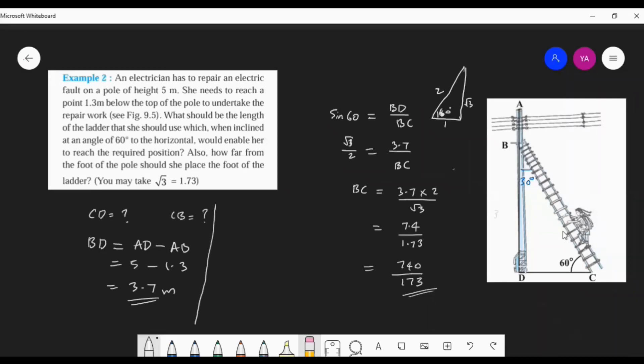Look here, we cannot finish here because it is also asked to find how far from the foot of the pole should she place the foot of the ladder. So CD also you want to find out. With respect to 60, which is the trigonometry ratio we want to take? Of course tan. We can take tan, or you can take sine because we have already found BC.